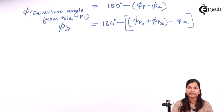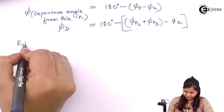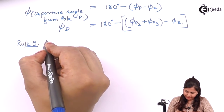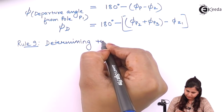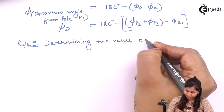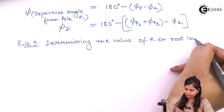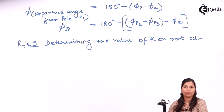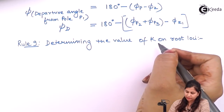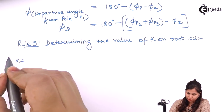Rule number 9 is to determine the values of K on the root locus. For any point P lying on the root locus, K equals the product of lengths of vectors drawn from all open loop poles to point P, divided by the product of lengths of vectors drawn from all open loop zeros to point P.